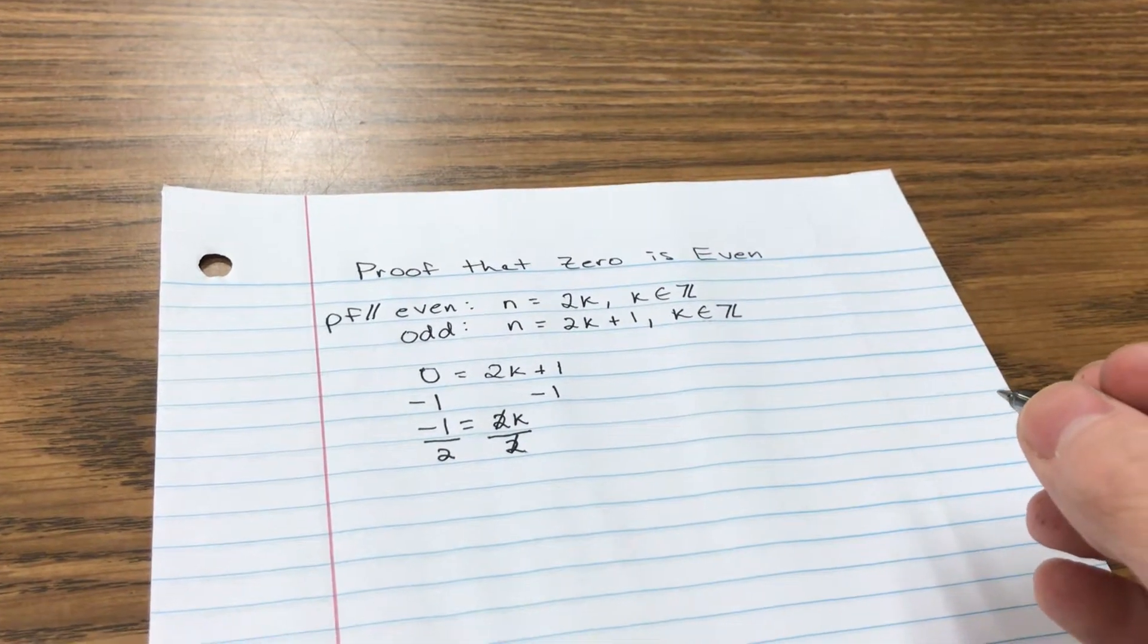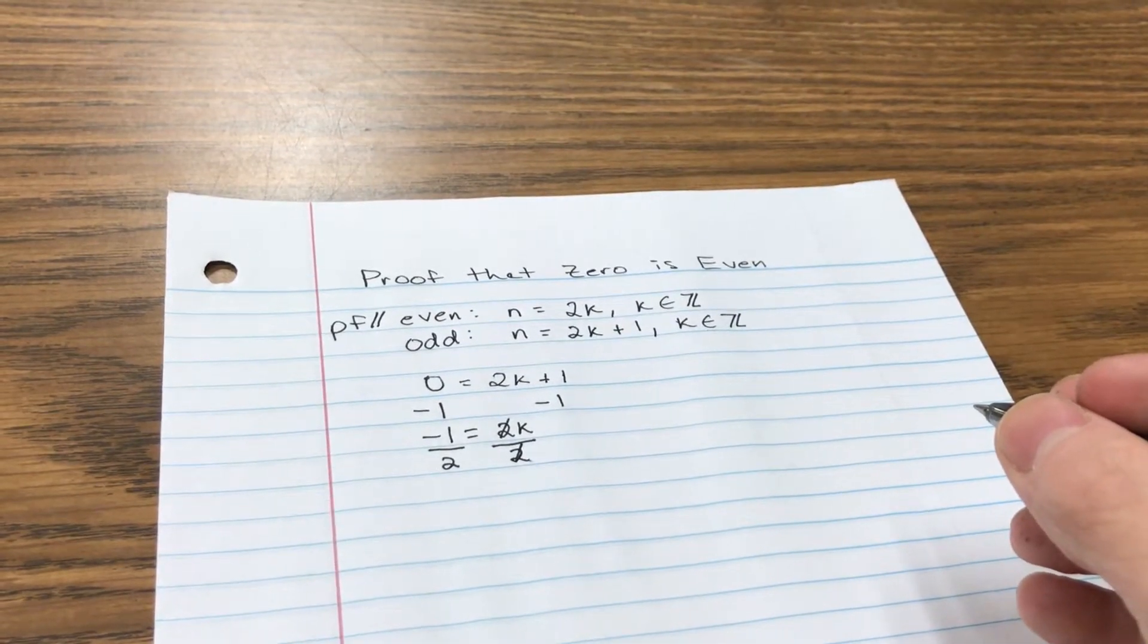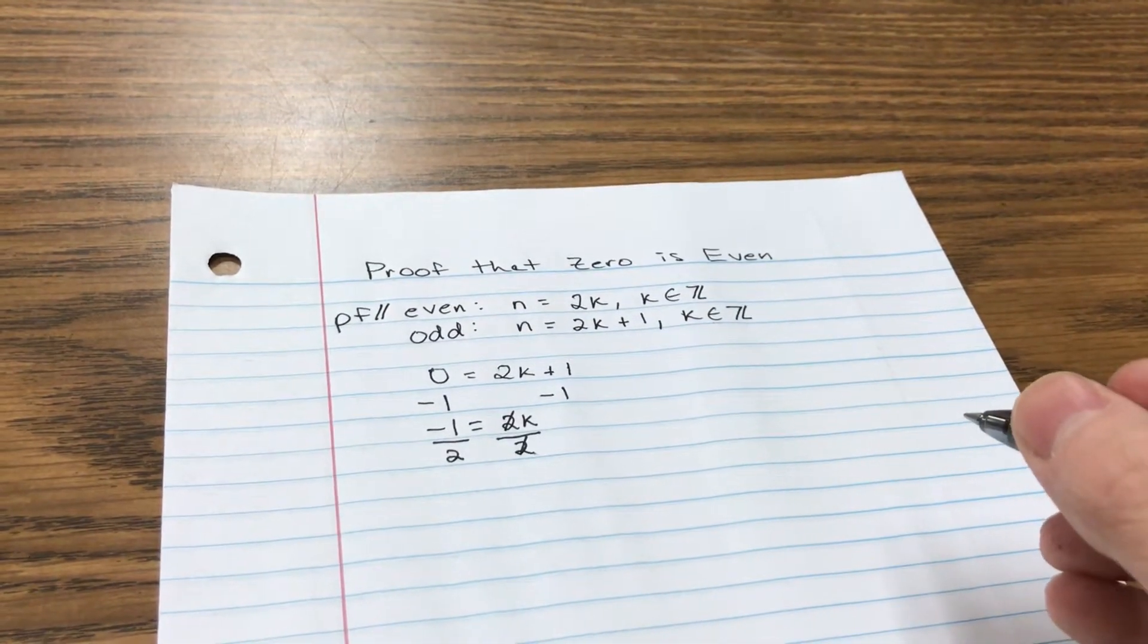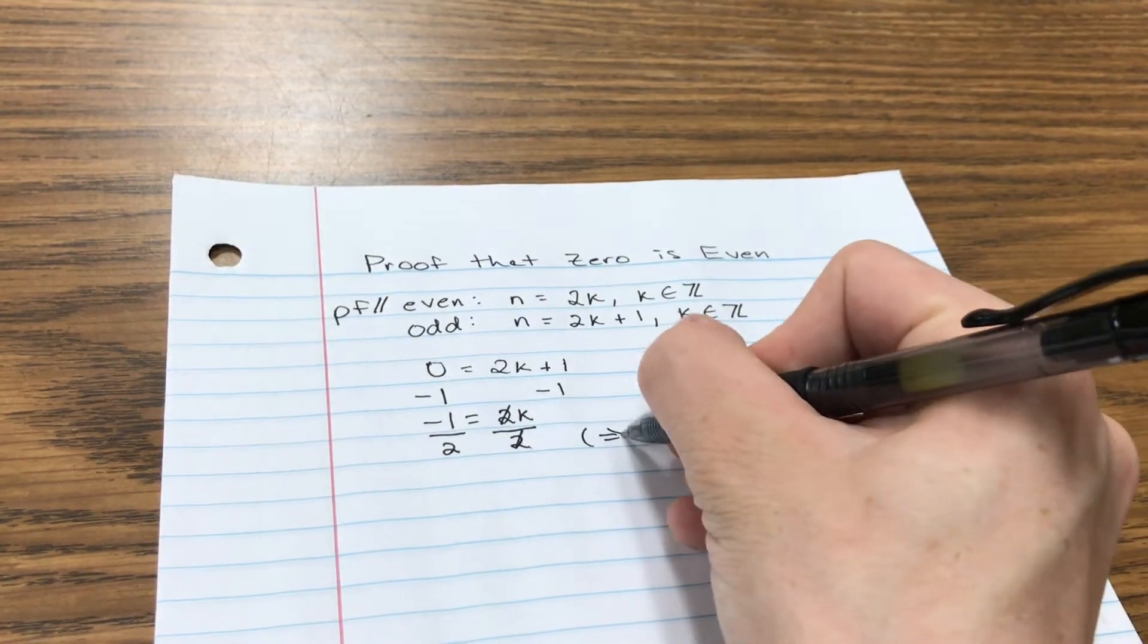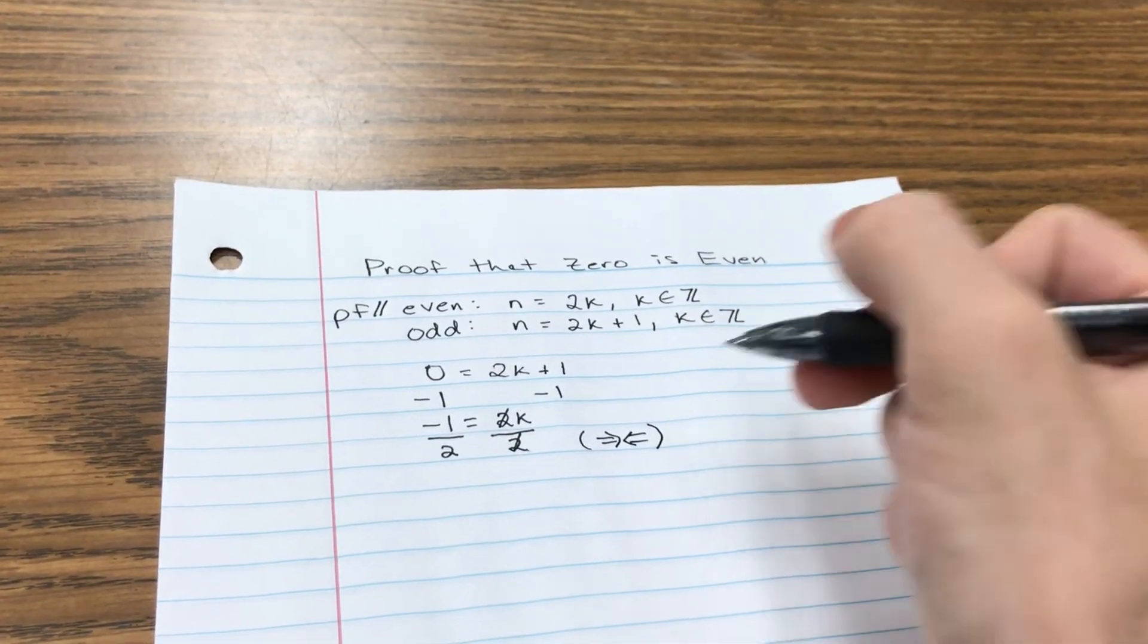That means we've reached what's called a contradiction, because we started off assuming that 0 is odd, and it turns out when we go down that path of thinking we arrive at a contradiction.